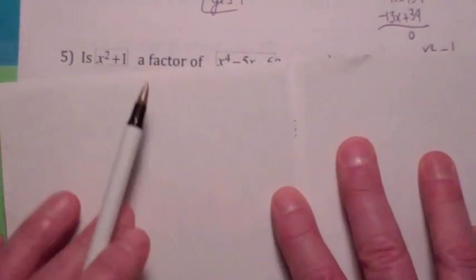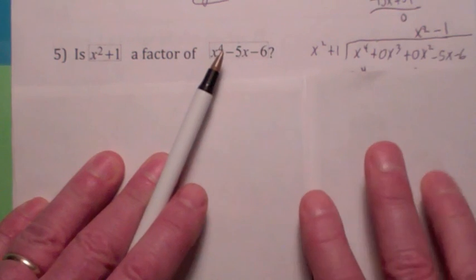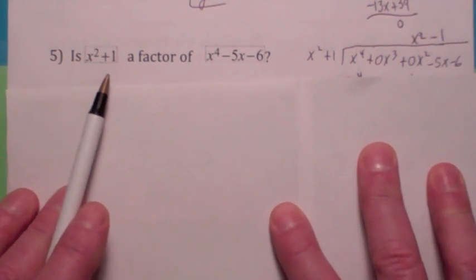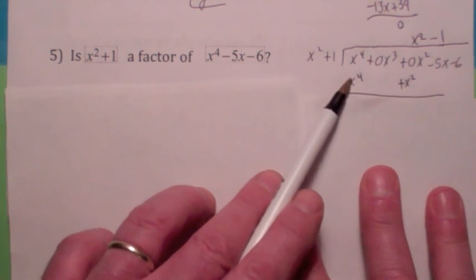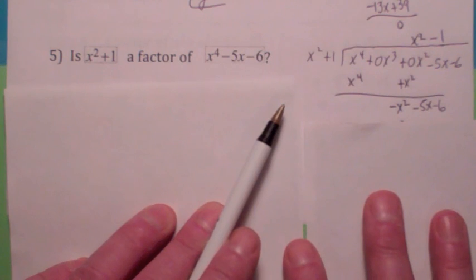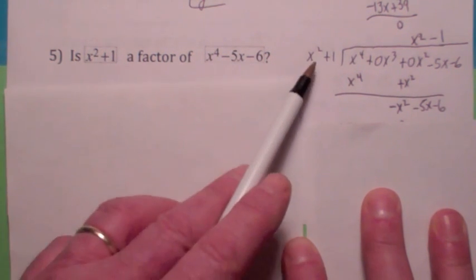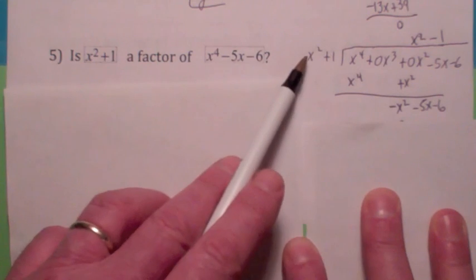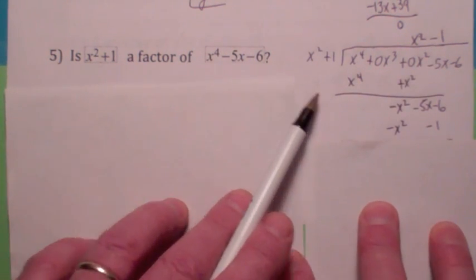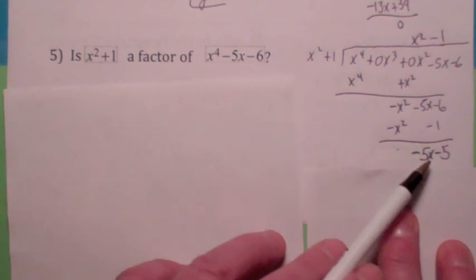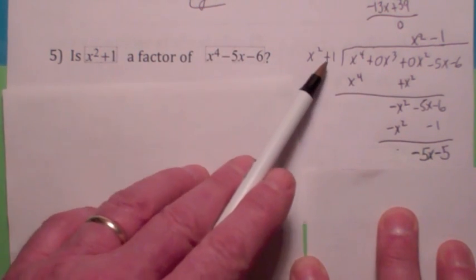Let's do one more. You've got to watch it — you may have some missing terms. A good idea would be to leave placeholders there. Set it up, then ask: what do you multiply x squared by to get x to the 4th? The answer is x squared. Multiply each term by x squared: x squared times x squared is x to the 4th, x squared times 1 is x squared. When you subtract, you get negative x squared minus 5x minus 6. You keep going — what do you multiply x squared by to get negative x squared? Negative 1. Subtract, and the x squared terms cancel, leaving negative 5x minus 5. What do you multiply x squared by to get negative 5x? Nothing — you're done because the degree of the remainder is less than the degree of the divisor.